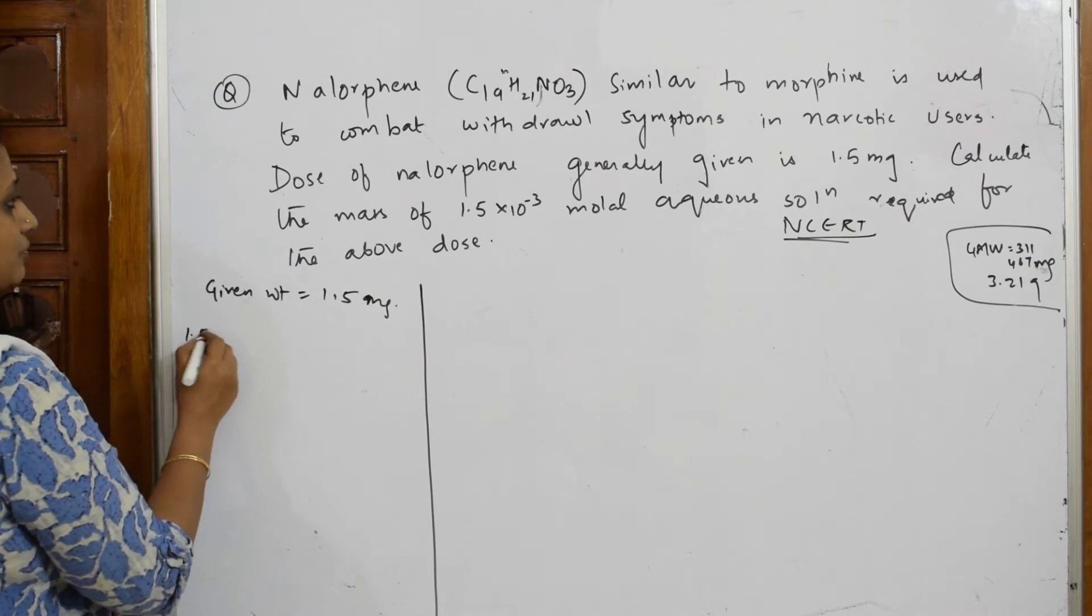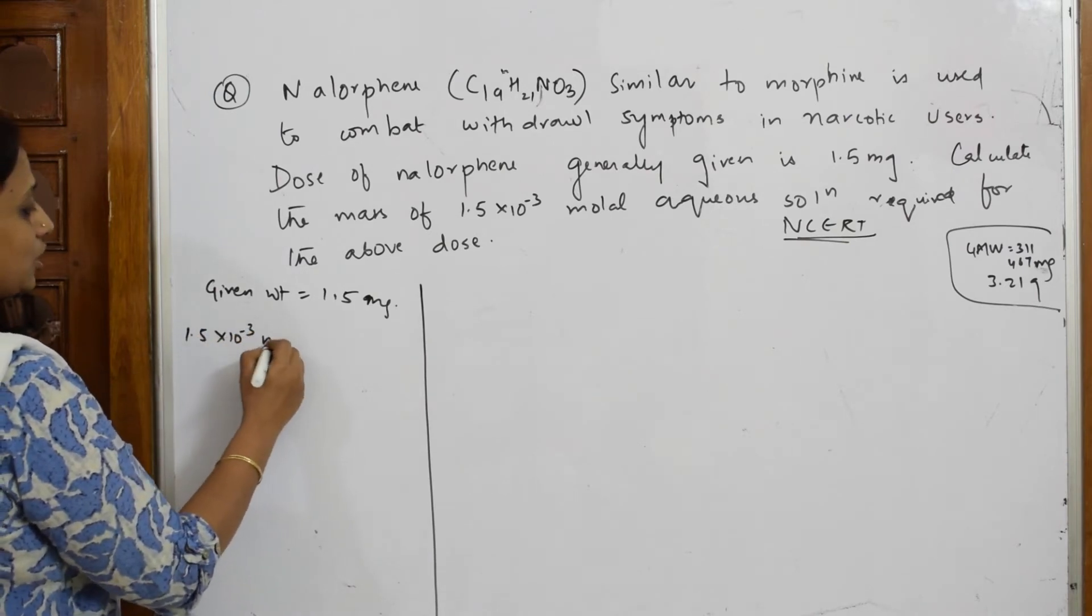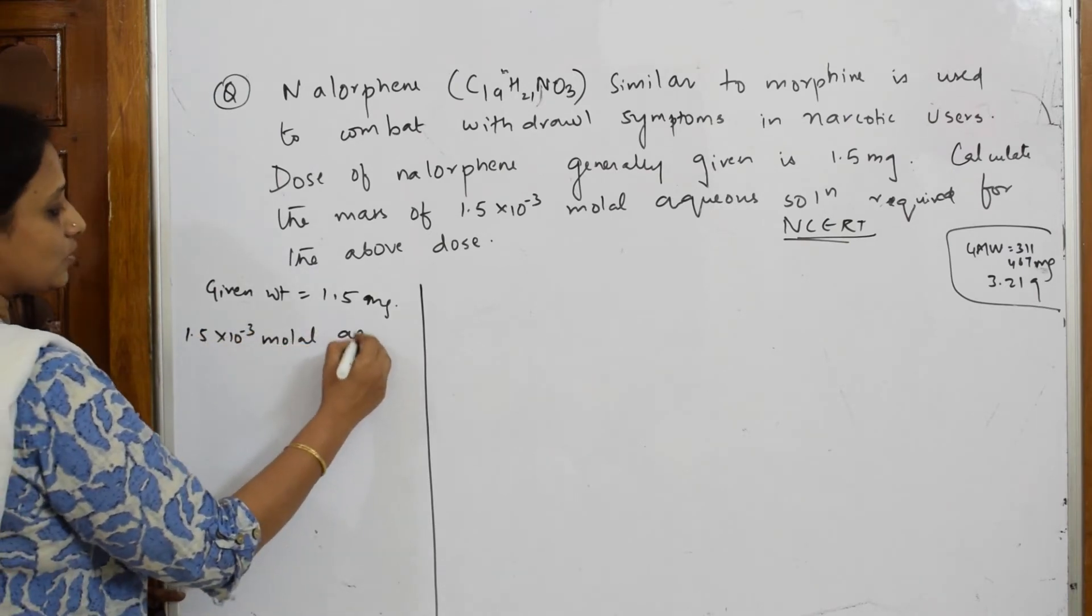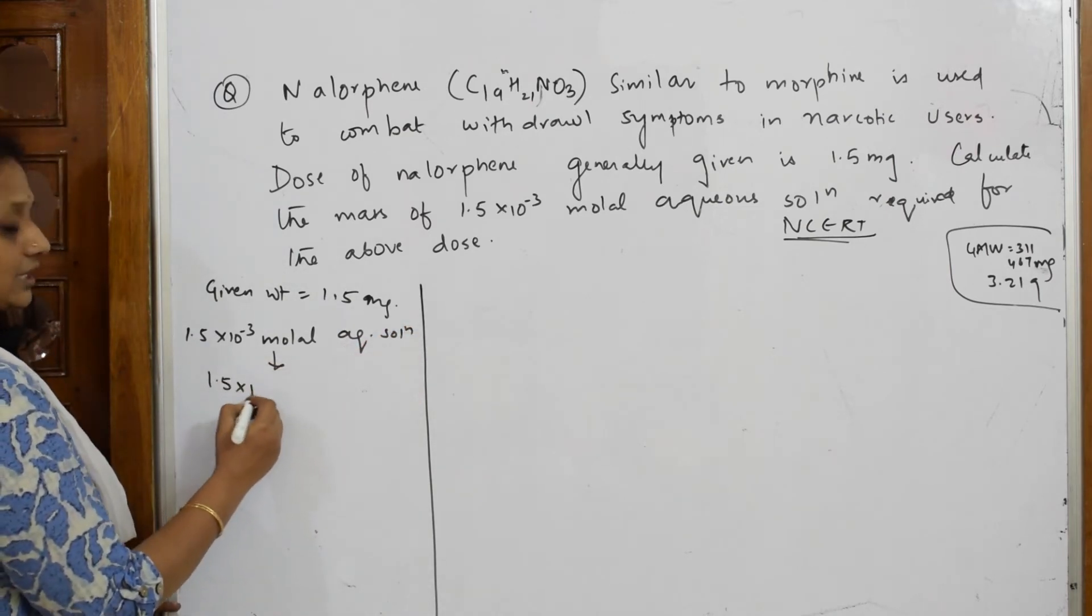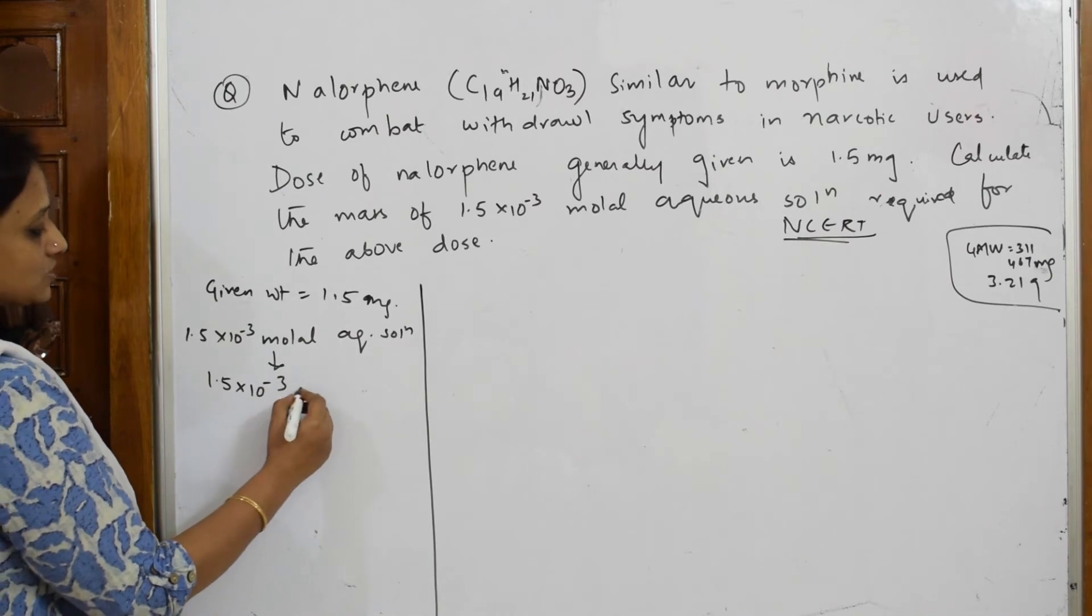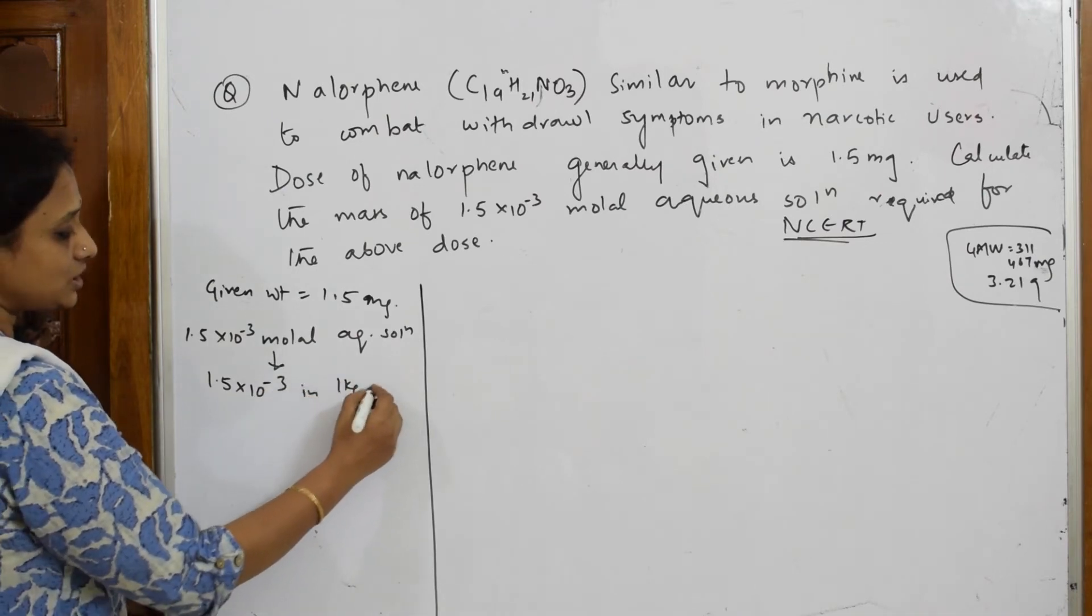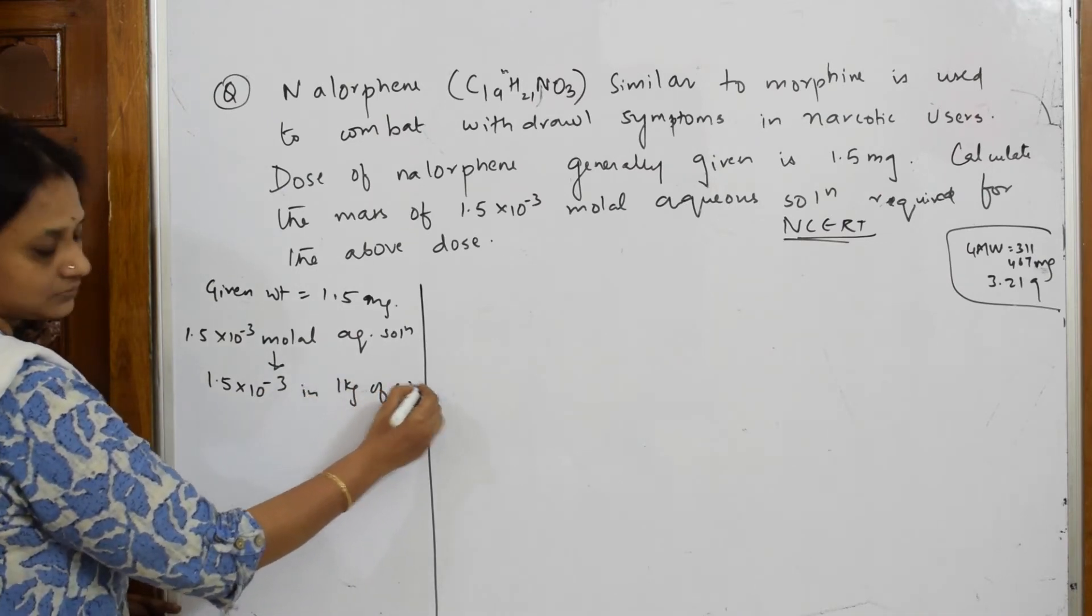If 1.5×10^-3 molar aqueous solution, that means this is nothing but 1.5×10^-3 moles dissolved in 1 kg of solvent.